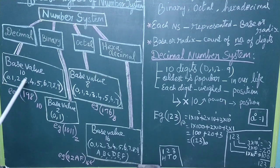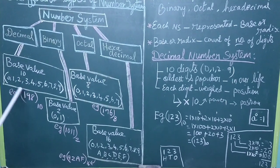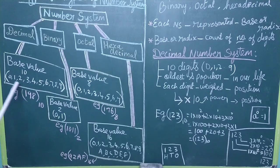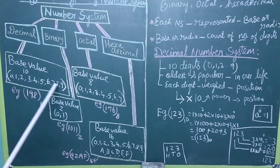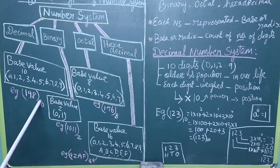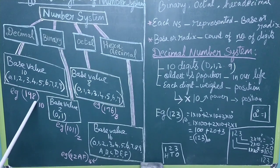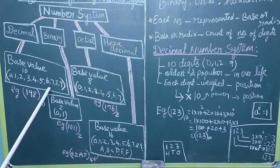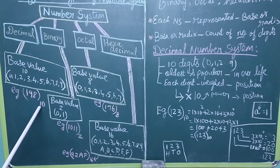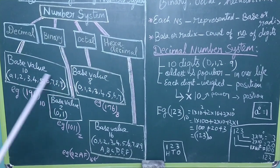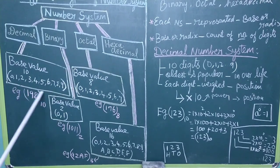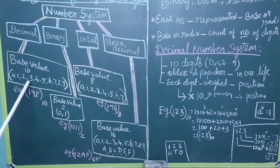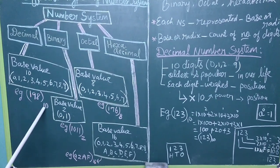So its base value is 10. For example, we form a number 198 from these numbers: 1, 9, 8 — combined to form 198. So it is formed from these numbers, and its base value is 10. The decimal number system has a base value of 10.